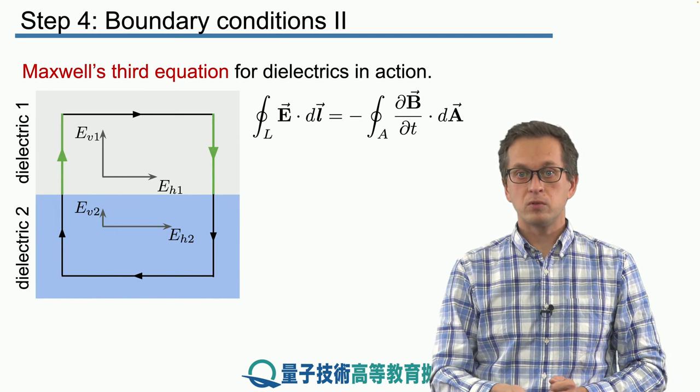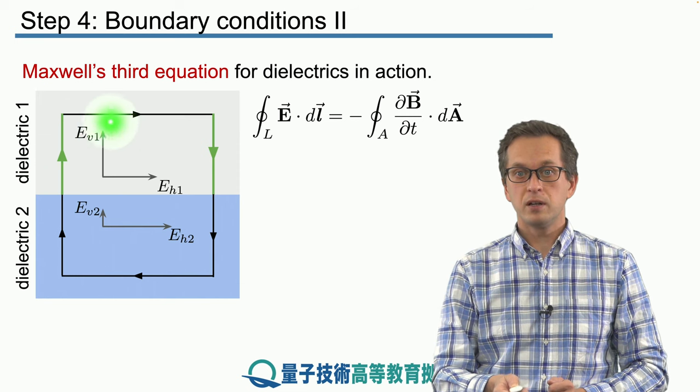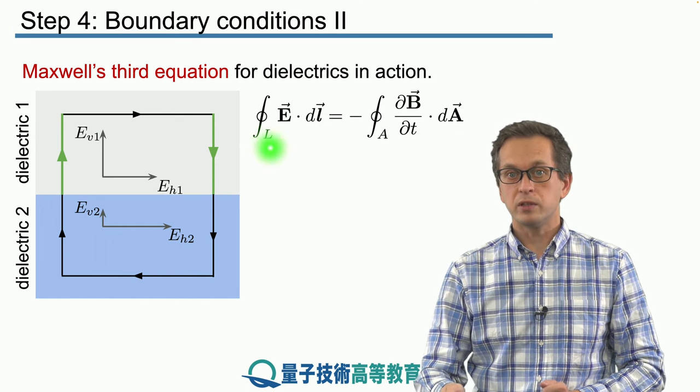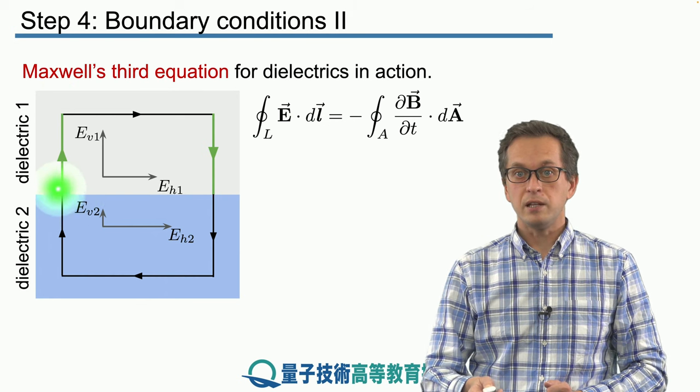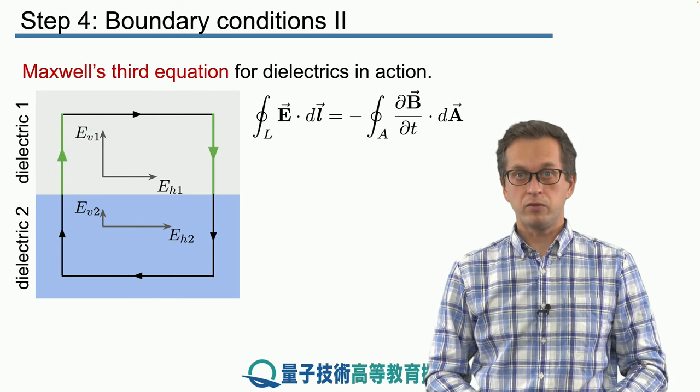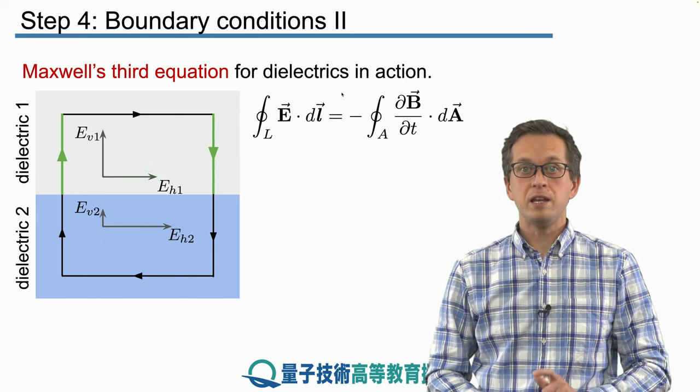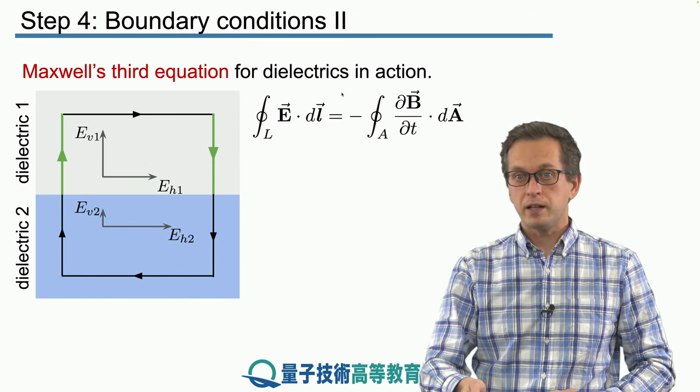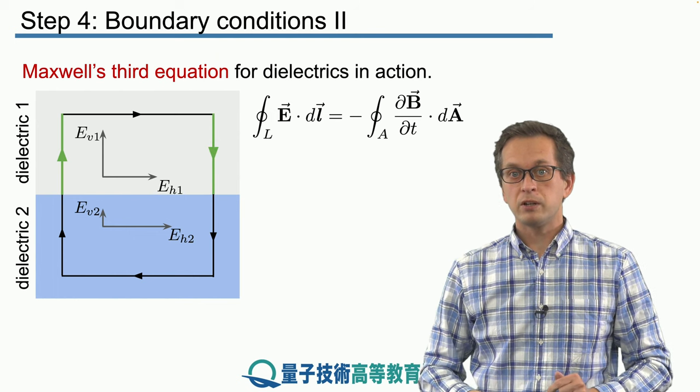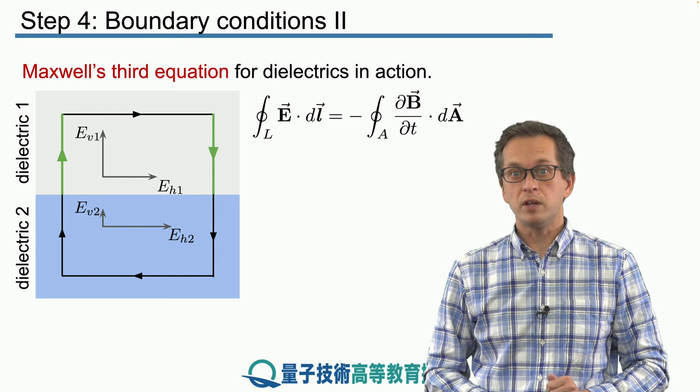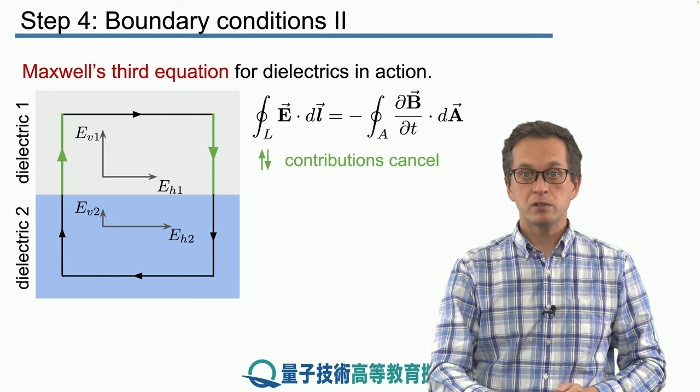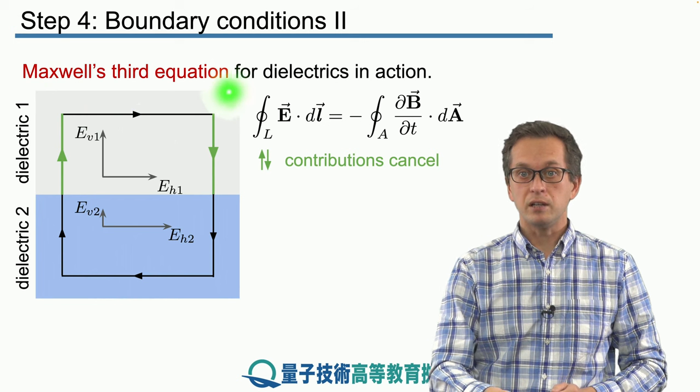First we are going to consider the contributions from this path over here and this path over here, only the green parts. You can see that if you try to evaluate the dot product between this line segment and E, you're only going to get contribution from EV1 because that's in the direction of our line segment. EH1 is not going to have any contribution whatsoever. On the other hand, if you walk down here, this part of our green line segment, you're also only going to get contribution from EV1 and not EH1. But now the line segment is in the opposite direction to our previous case. Therefore, the contributions from the line segments over here and here are going to cancel.